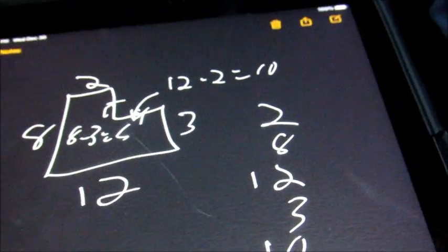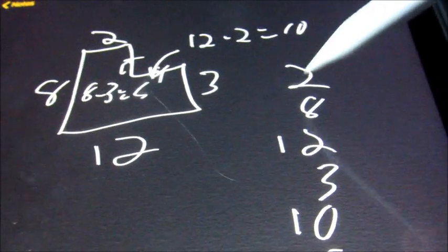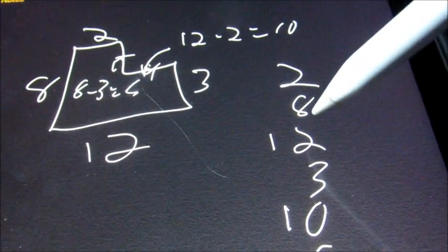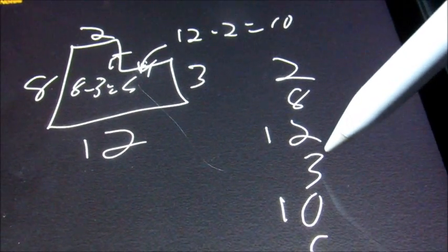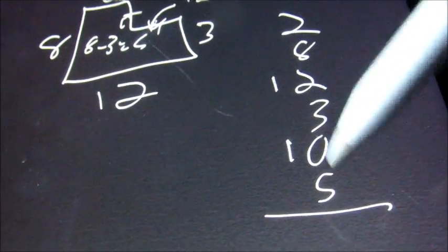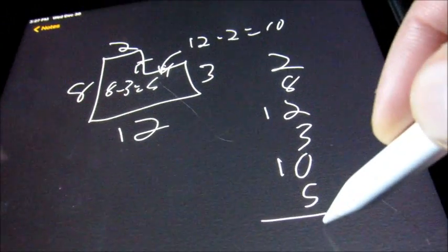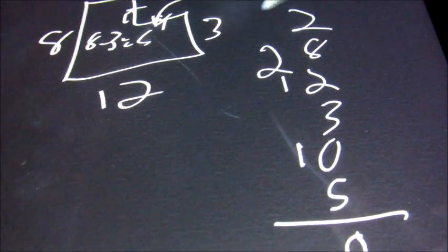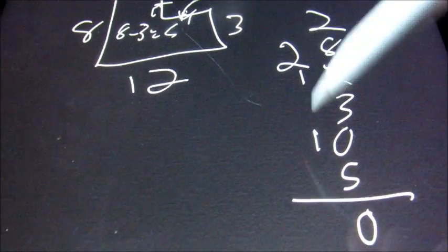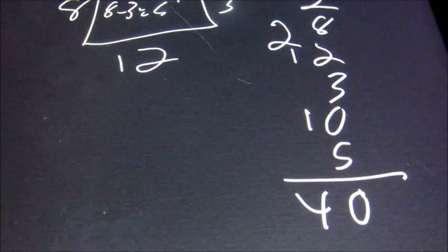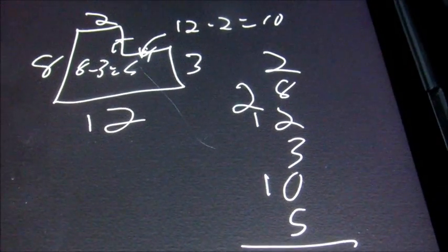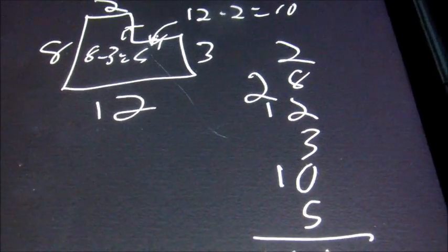Now when we add these: 2 and 8 is 10, plus 2 is 12, plus 3 is 15, plus 5 is 20. Carry the 2. We have 2 plus 1 plus 1 is 4. The perimeter is 40. And that is how you'll do everything for section 1.2.